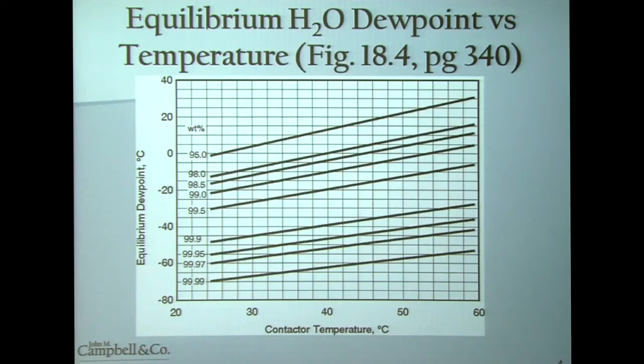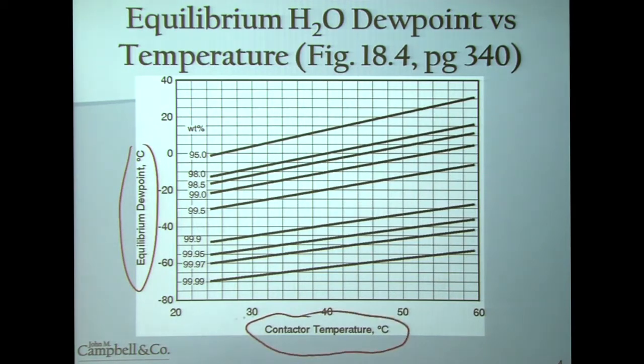In order to determine the lean concentration of TEG required to meet a water dew point spec, we look at the equilibrium water dew point versus temperature curve. We plot equilibrium water dew point versus contactor temperature, and because TEG loves water so much and the relationship is fairly independent of pressure, you'll only see one curve in our textbooks.